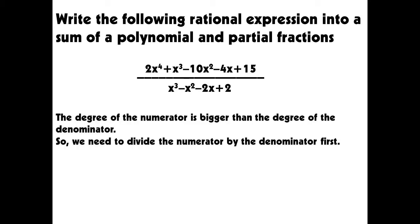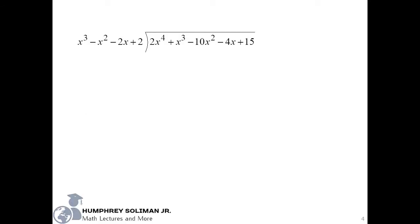You can observe that the degree of the numerator is bigger than the degree of the denominator. So, we need to divide the numerator by the denominator first. We can use long division or synthetic division here. We will divide the first term inside by the first term outside to get 2x.